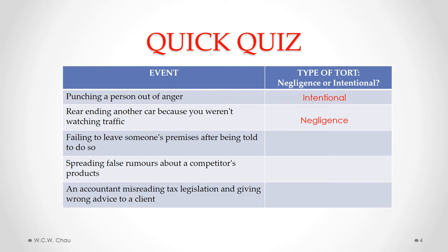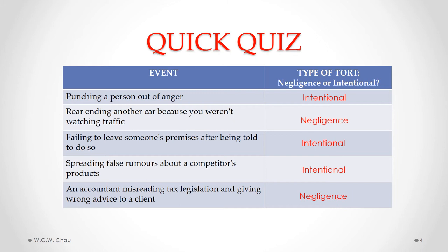The third event, failing to leave someone's premises after being told to do so, is an intentional tort. You intentionally failed to leave the premises, and that is specifically the tort of trespass. The next event, spreading false rumors about a competitor's product, is also an intentional act and an intentional tort, which is called injurious falsehood. The last one — an accountant misreading tax legislation and giving wrong advice to a client — is negligence. The accountant accidentally misread tax legislation and did not intentionally give wrong advice, so that is a tort of negligence.